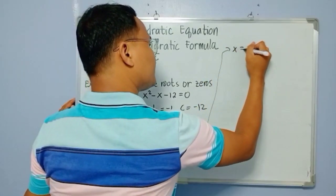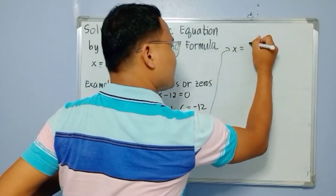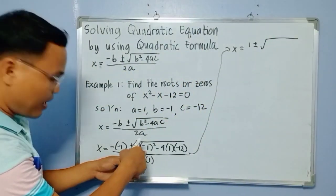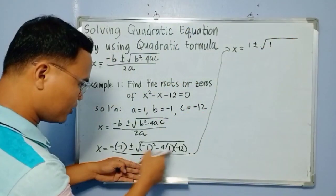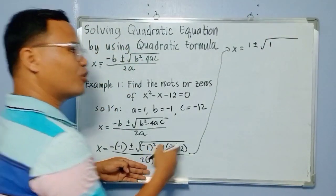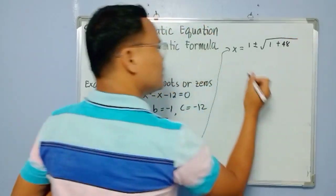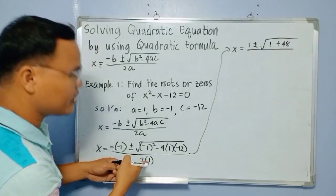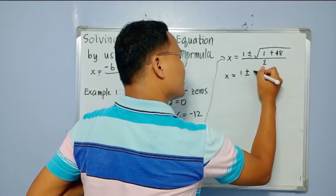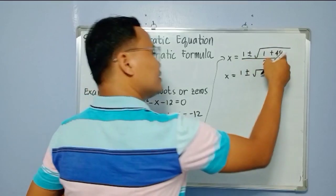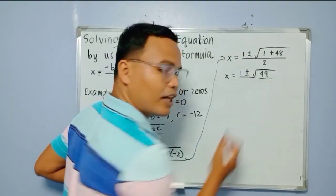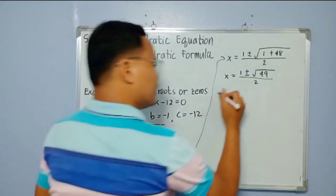Continuing: negative times negative is positive, so we have positive 1. Plus and minus, copy the square root symbol. Negative 1 squared is 1, then multiplying: negative 4 times 1 is negative 4, times negative 12 is positive 48. So we have 1 plus 48, all over 2 times 1, which is 2.